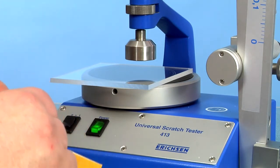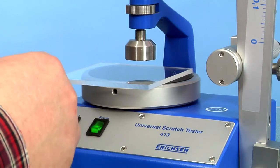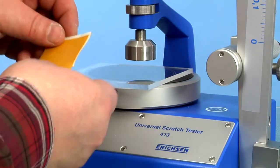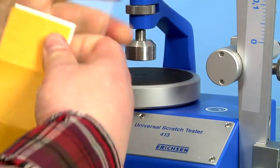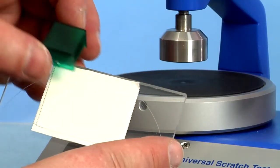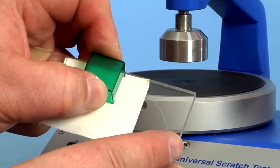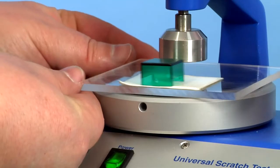This method is also suitable for small samples. Simple fixing of small samples using double-sided adhesive tape. The easily improved sample support plate is fixed quickly and easily by turning the screw.